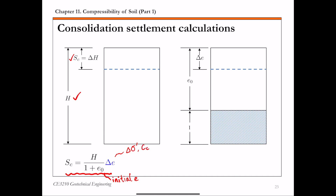Specifically, we need C sub C, which is the compression index, and C sub S, which is the swell index or recompression index. To get this expression, we make use of the definition of vertical strain in 1D consolidation, epsilon V, which is the ratio of change in height — that's the consolidation settlement — over the initial height. This can be related to the void ratio change. Looking at the phase diagram on the right-hand side, this is the solid phase and this is the void phase, filled with water if the clay is saturated. So epsilon V can also be expressed as delta E over 1 plus E₀. Solving for SC gives this expression.